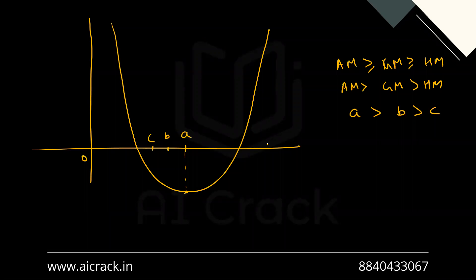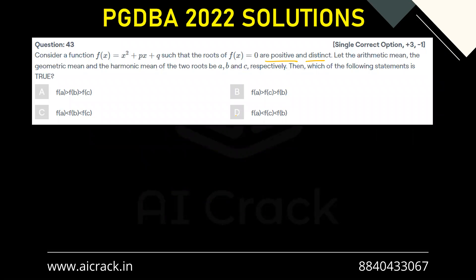So we can clearly see that this would be f(c), this would be f(b), and this would be f(a). So we can clearly see that f(c) is greater than f(b) is greater than f(a). So basically D is the correct answer.